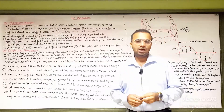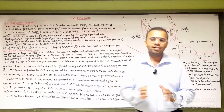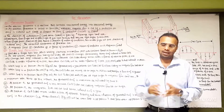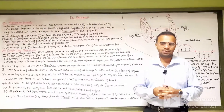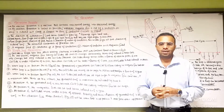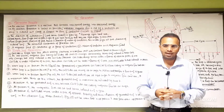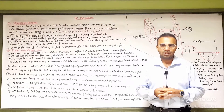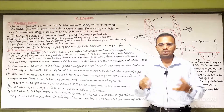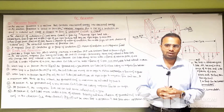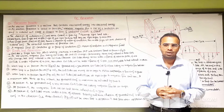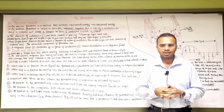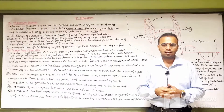Assalamu alaikum dear viewers, Shobim Adaw is here with a new lecture of the Electrical Engineering and Electrical Machine series. Today we are going to understand the operation of a generator — the working principle of how the generator produces alternating currents and voltage.